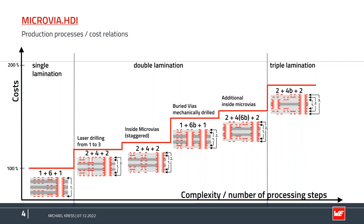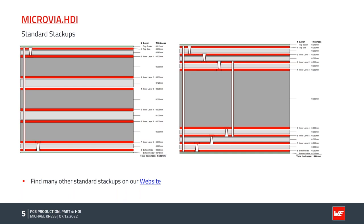For all these structures, the single press variant baseline cost is at 100 percent. The next steps, using more drilling processes and plating processes, the cost goes higher. In the last variation — triple lamination — we get a price level of 175 percent compared to the first eight-layer with one microwire layer. In the next I will show you the standard stackups.